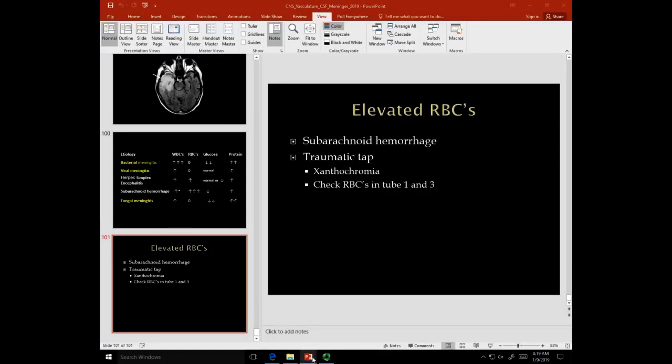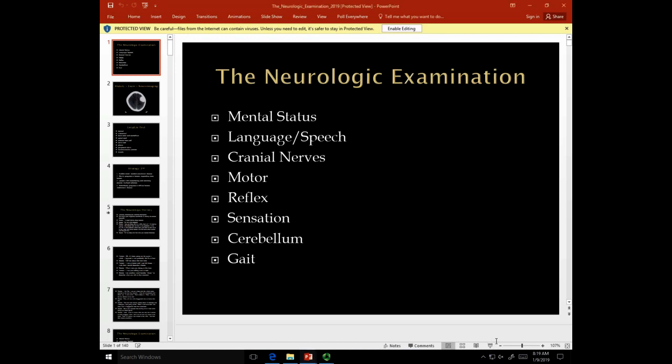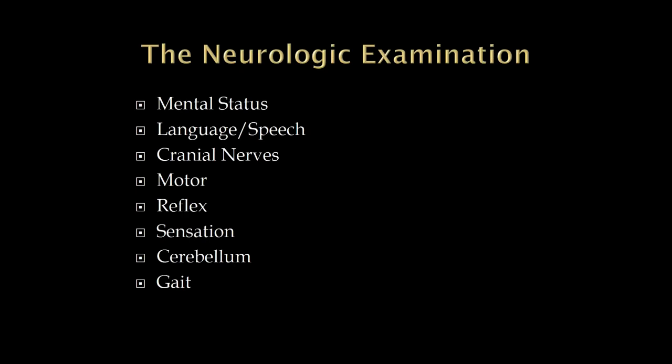Let's get on to the neurologic examination. What we've been doing is nice for naming and identifying things, but this is where we begin to make it more clinical — the neurologic examination is where all the anatomy we've been talking about starts to talk to us. Here are the different parts: mental status, speech and language, cranial nerves — we'll spend quite a bit of time on cranial nerves — then the motor exam, reflexes, sensory exam, cerebellar testing, and gait.